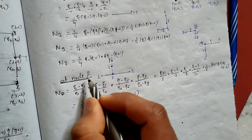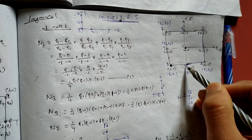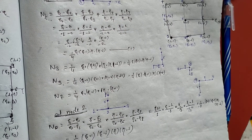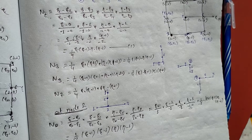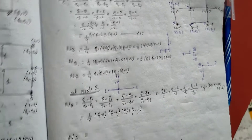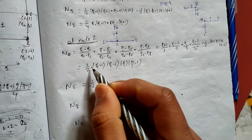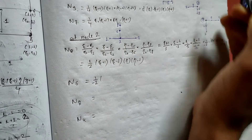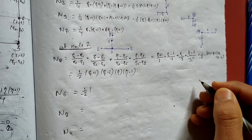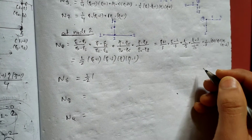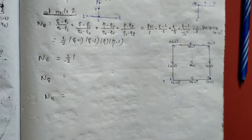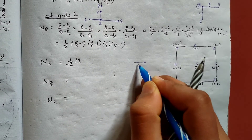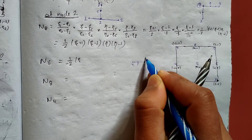Similarly, if we have mid-side nodes 2, 6, 8, and 4 — we have to find those shape functions. For N6, we have zeta plus 1, and the pattern continues. N6 = 1/2 · (1 - eta²) · zeta · (zeta + 1), using the same Lagrange approach for mid-side nodes on the vertical sides.